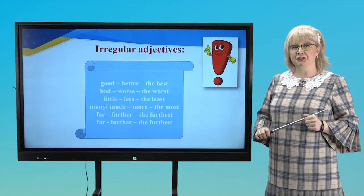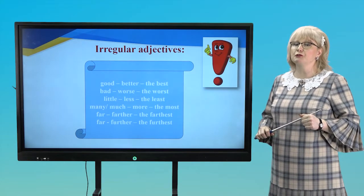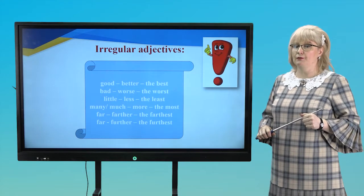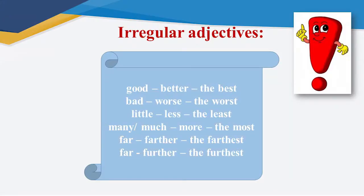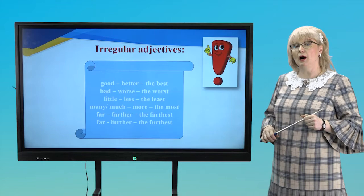And attention! You know that in English language we have irregular forms, irregular adjectives. What are they? For example, good, better, the best, bad, worse, the worst, little, less, the least, many, much, more, the most, far, farther, the furthest, far, further, the furthest. Learn all these forms of adjectives by heart.